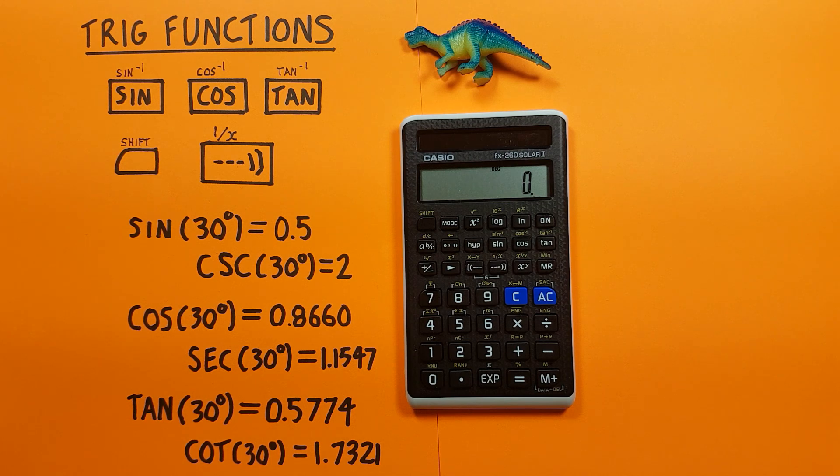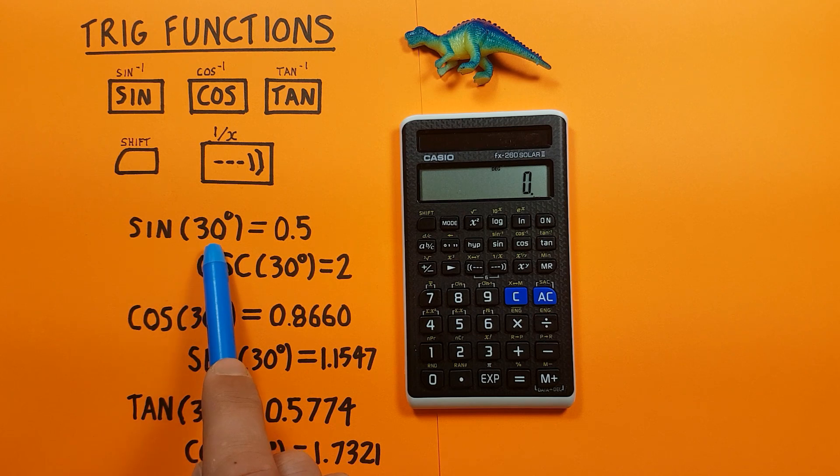All right, those are easy, but what if we want to find the cosecant, secant, or cotangent of a number? Well, to do this we first find the corresponding value. So say if we wanted to find the cosecant of 30 degrees, we first find sine of 30.